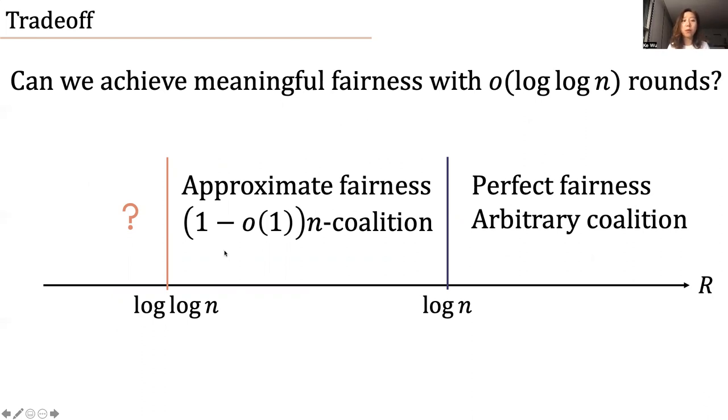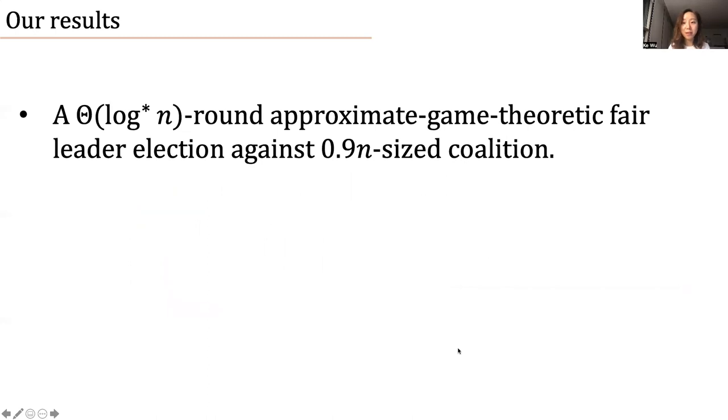But what if we want to achieve smaller round complexity? Can we do smaller than log log n rounds? Can we still achieve meaningful fairness within small or log log n rounds? In this work, we give an affirmative answer. We give a log star round approximate game theoretically fair leader election against say 0.9 n sized coalition. And in the full talk, we'll talk about how we get this result, and we will give a fully parameterized result about the round complexity and fairness parameter. Thank you.